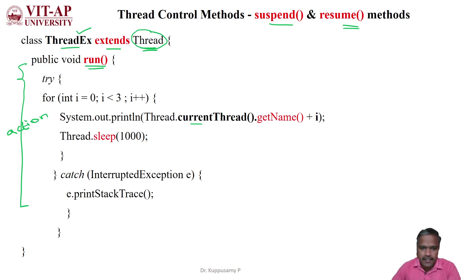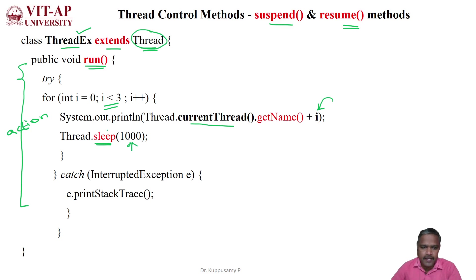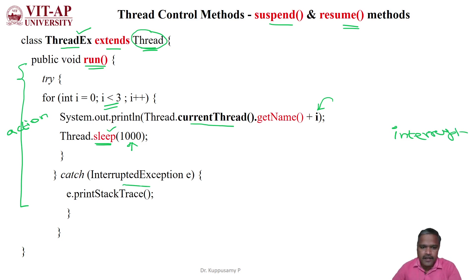The action is to get the currently running thread for three iterations, where the iteration number is given by variable i. For each iteration we are delaying the currently running thread for 1000 milliseconds using the sleep method. If the interrupt method is used, then the InterruptedException will handle that exception if it occurs.